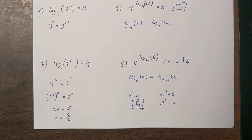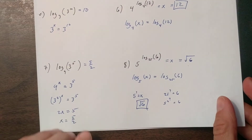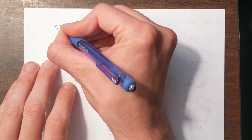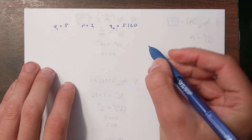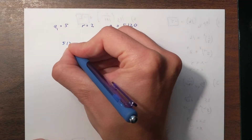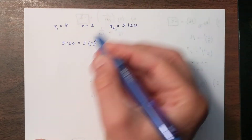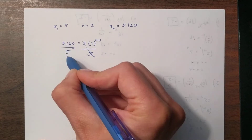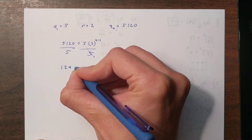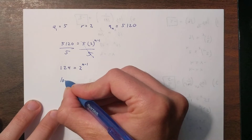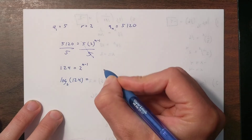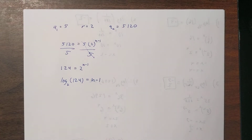The whole point of all of this is to solve geometric sequence problems. For example, if the first term is 5 and the rate is 2, what term equals 5120? We set up the explicit formula: 5120 equals 5 times 2 to the power of n minus 1. Divide both sides by 5 to get 1024 equals 2 to the power of n minus 1. As a logarithm, this is log base 2 of 1024 equals n minus 1.